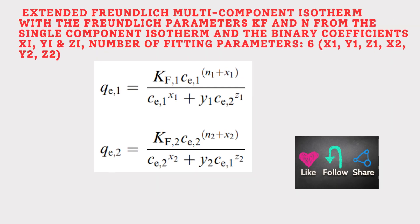And then comes extended Freundlich multi-component isotherm with Freundlich parameters derived from a single component isotherm and binary coefficient x1, y1 and z1. Number of fitting parameters 6: x1, y1, z1, x2, y2, and z2. So the equation can be written as this.